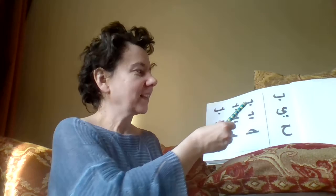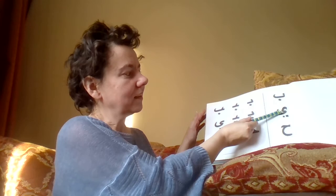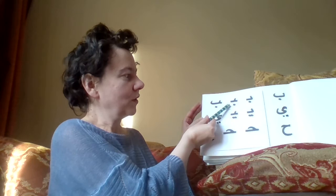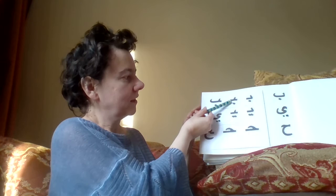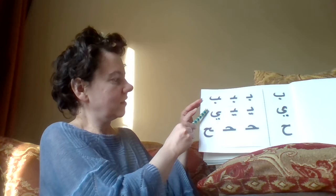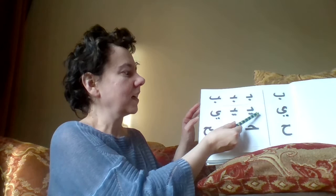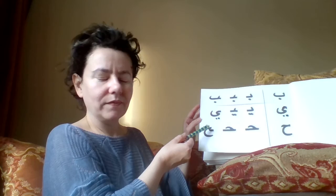It wasn't difficult because the Arabic letters behave like some people. Look at these three letters: B, I, and H. Look how they change when they are used to write a word. This is the form at the beginning, this is the form in the middle, and this is the form at the end of a word. They change their shape constantly.